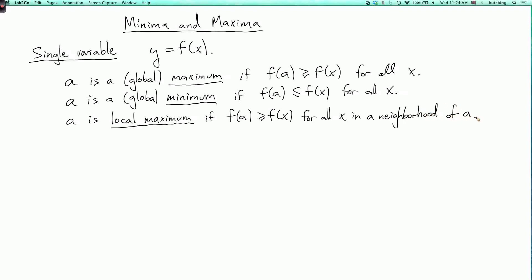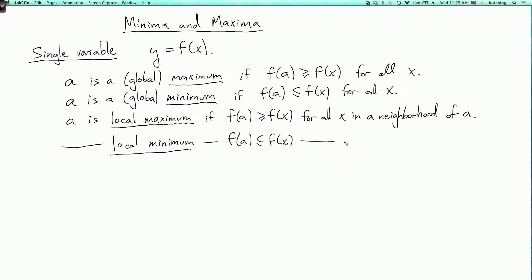I'll keep this informal. If we wanted to say this really formally, we would say that there exists epsilon greater than zero such that whenever the distance from x to a is less than epsilon, and f of x is defined, we have that f of a is greater than or equal to f of x. And then a local minimum is where f of a is less than or equal to f of x for all x in a neighborhood of a.